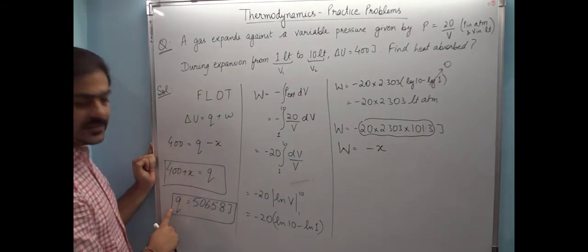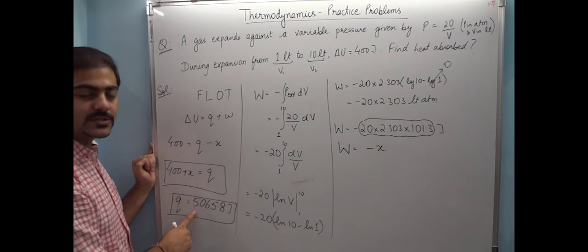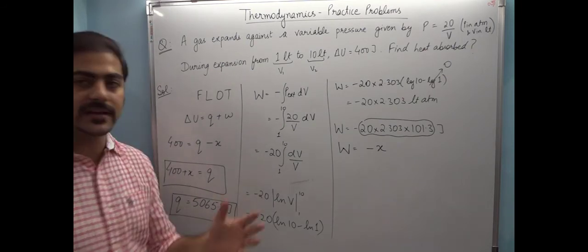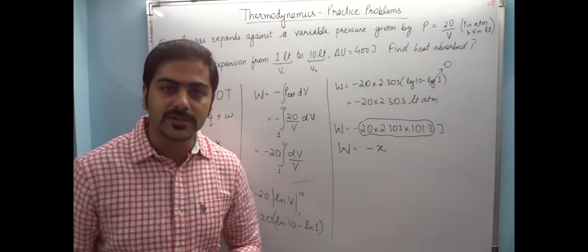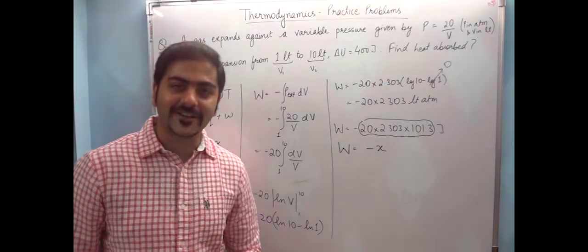And after that, move it to the right side and put the work done value here. Moving it gives us the final heat value of 5065.8 joules. In upcoming video lectures we'll discuss many more questions. Thank you.